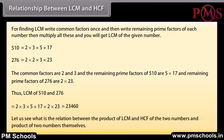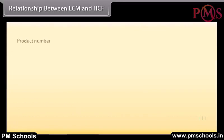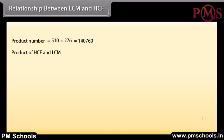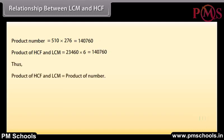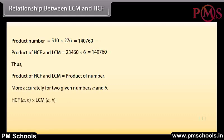Let us verify the relation between the product of LCM and HCF and the product of the two numbers. Product of numbers: 510 into 276 equals 1,40,760. Product of HCF and LCM: 6 into 23,460 equals 1,40,760. Thus, product of HCF and LCM equals product of the numbers. More accurately, for two given numbers A and B: HCF(A,B) into LCM(A,B) equals A into B.